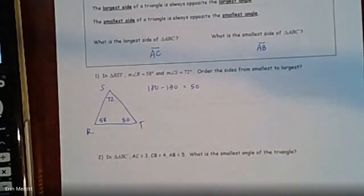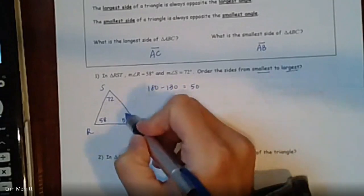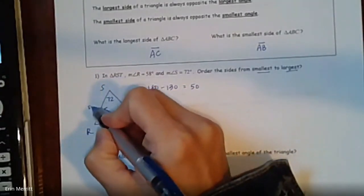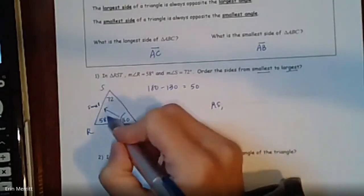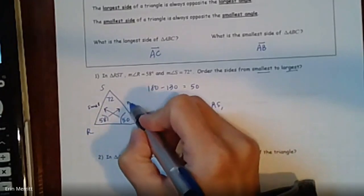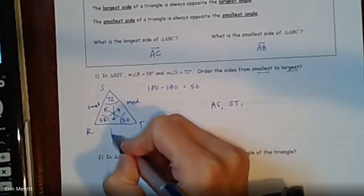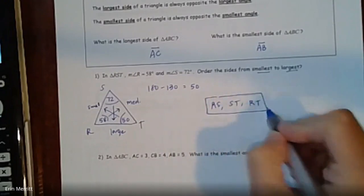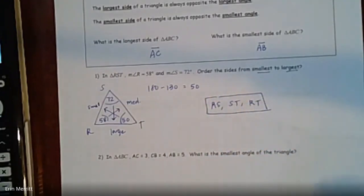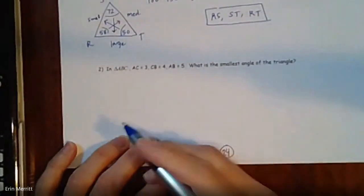That leaves us with 50 degrees for the third angle. Now that we know all three angle measures, the smallest angle is 50, so the smallest side is RS. The next biggest angle is 58, so the medium side is ST. The largest angle is 72, so the largest side is RT.